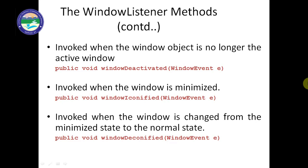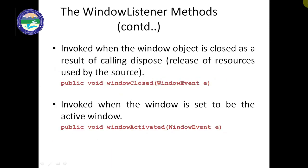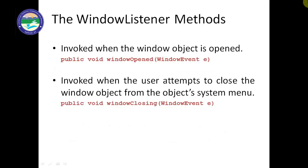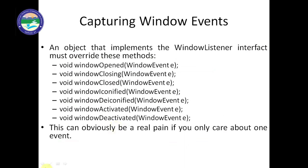windowIconified is invoked when the window is minimized. When we minimize the window, the windowIconified function will execute. windowDeiconified is the reverse — it is invoked when the window is changed from the minimized state back to the normal state. These are all the window-related event functions, and they are automatically activated during window operations.